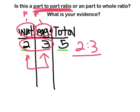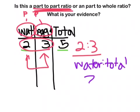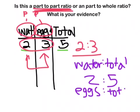It would be either, if you're comparing water to total, it would be 2 to 5. And then, if you're comparing eggs to total, oh my God, and then it would be 3 to 5. Yay!